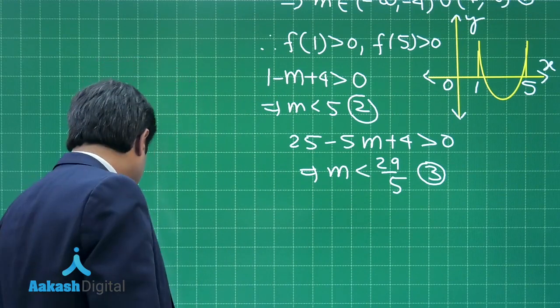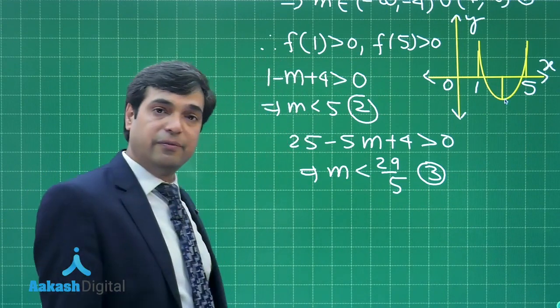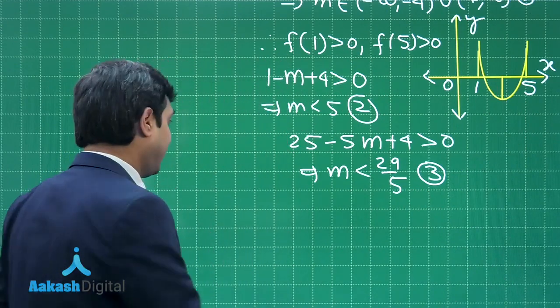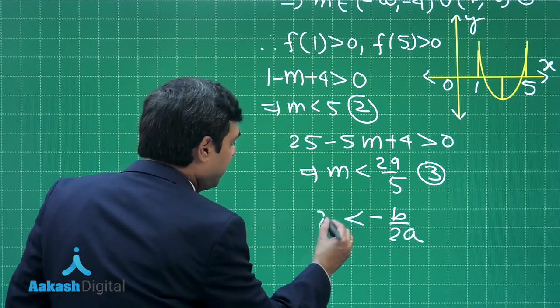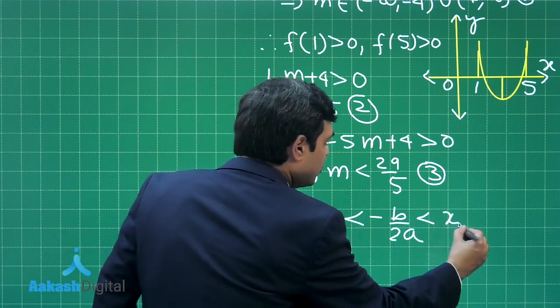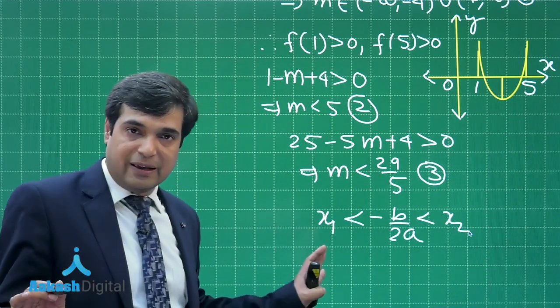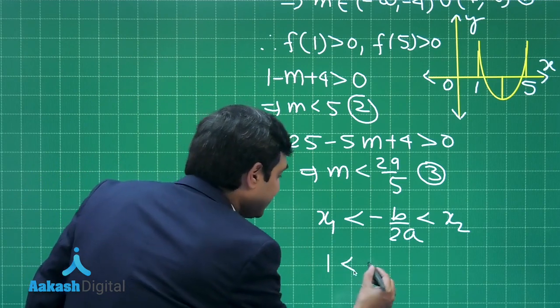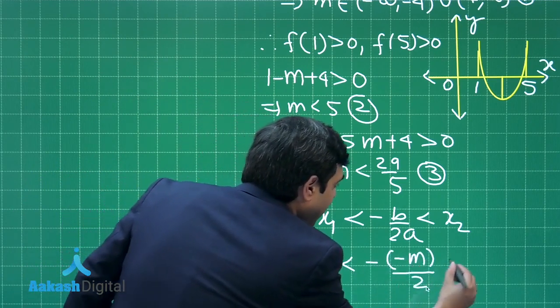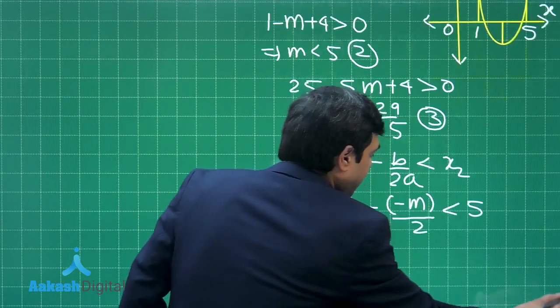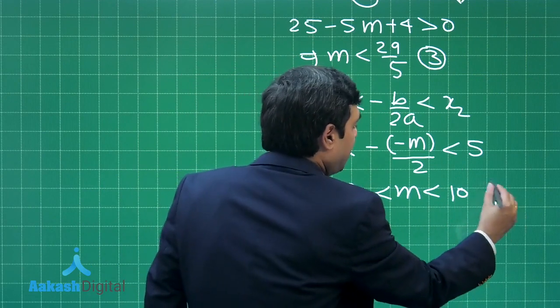Next, we can see here that the vertex point is lying between both 1 and 5. So x-coordinate of vertex, meaning -b/2a, it is lying between x₁ and x₂, where I am saying this term as x₁ and this term as x₂. So let us write here 1 < -(-m)/2 < 5, giving me m is between 2 to 10. This is result number 4.